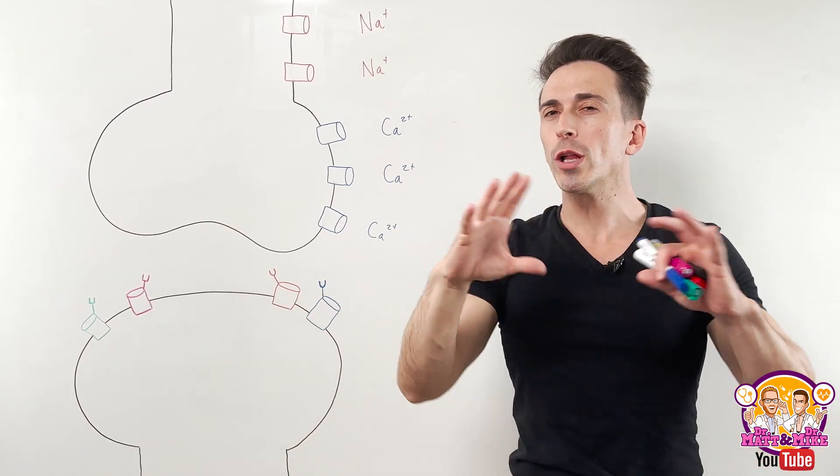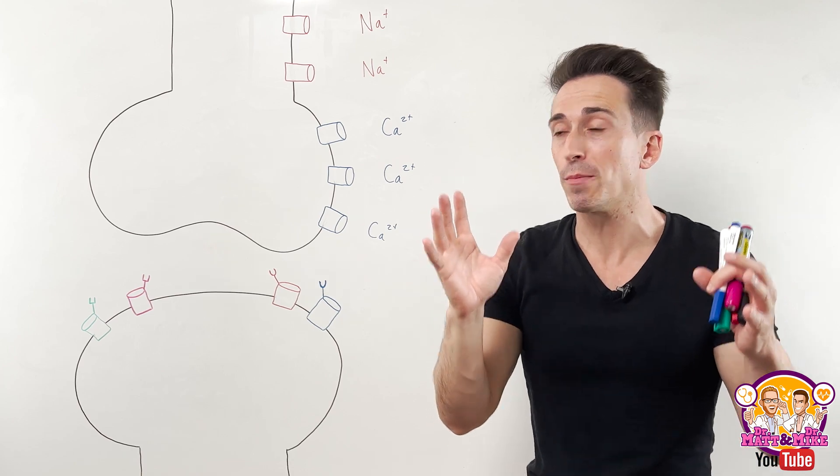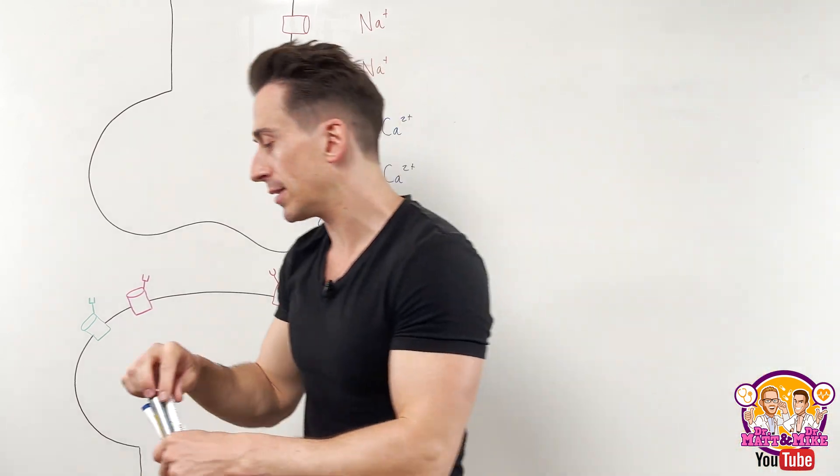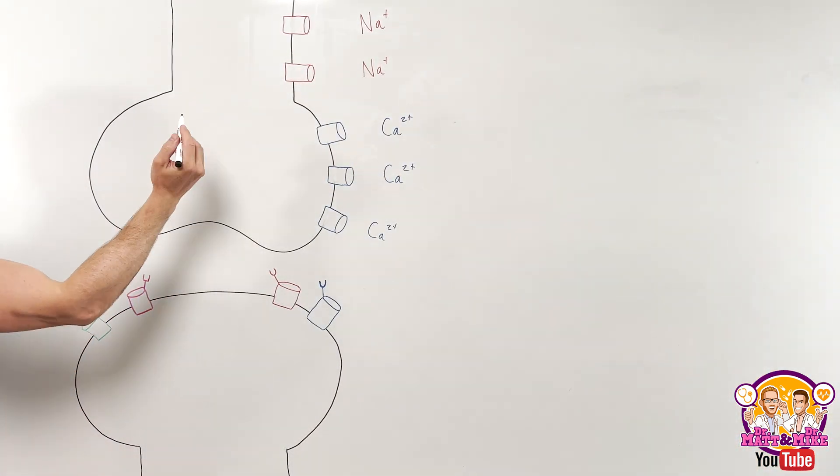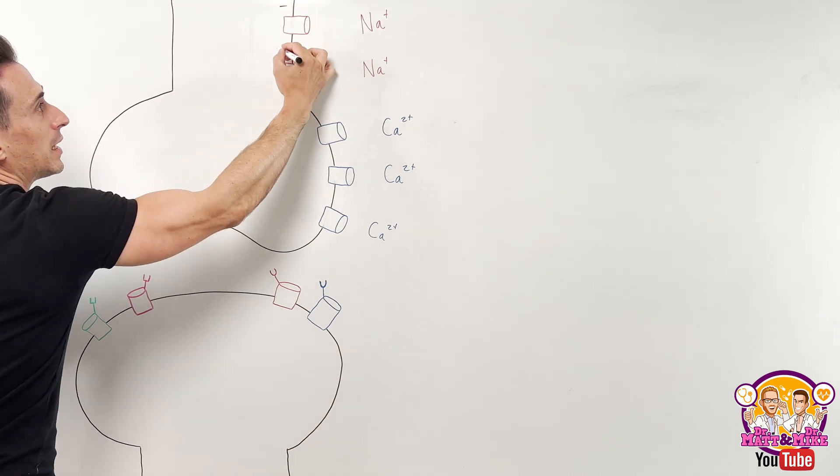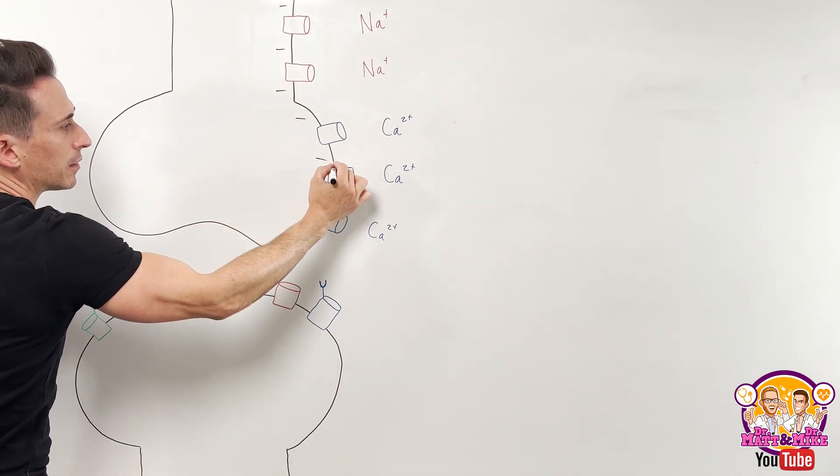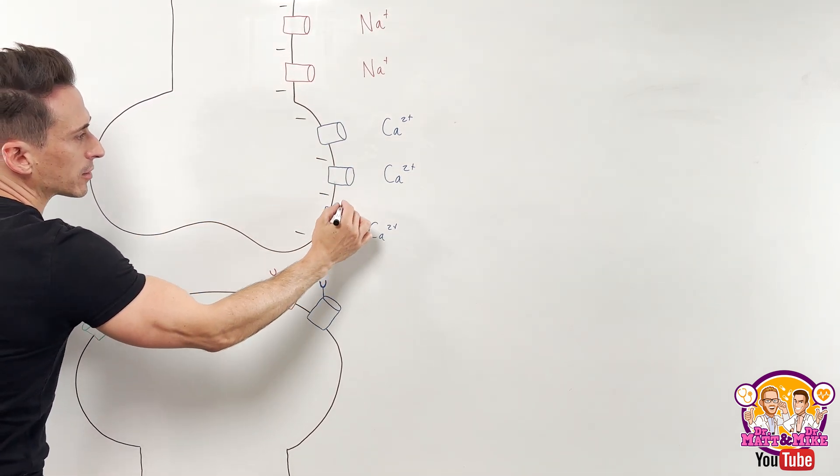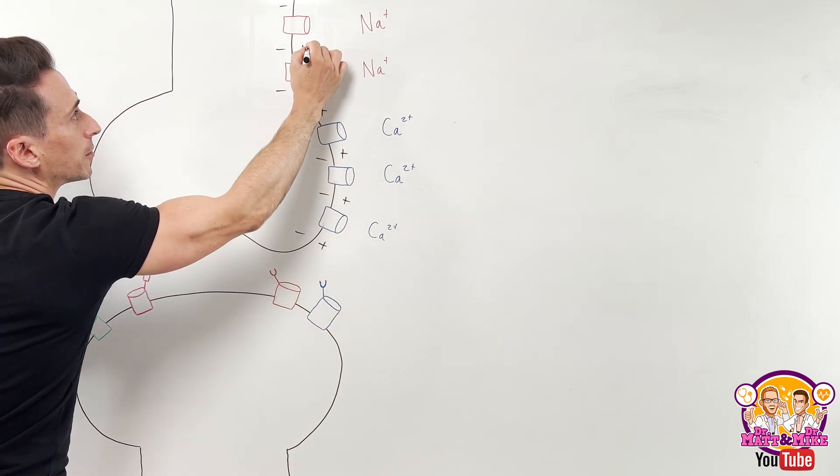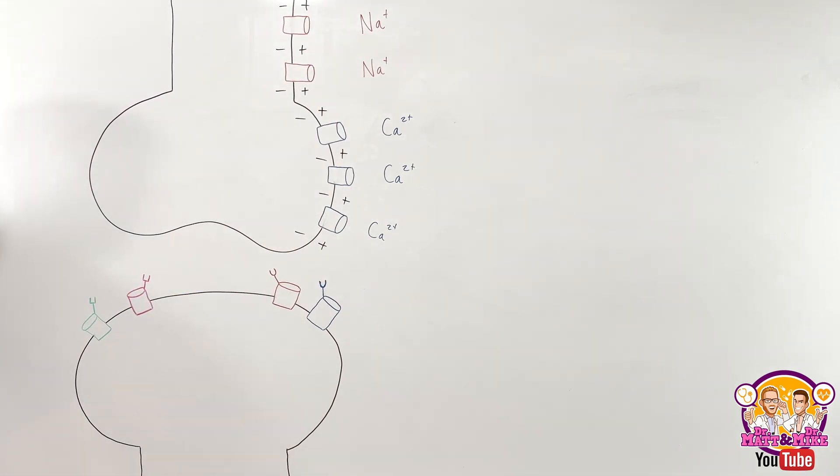Remember that all excitable tissue has a resting membrane potential. That simply means that inside the cell, it is negative compared to outside the cell where it is positive. That's the resting membrane potential.